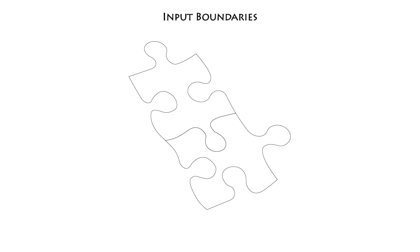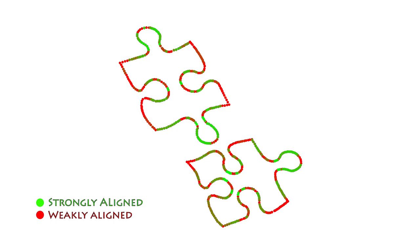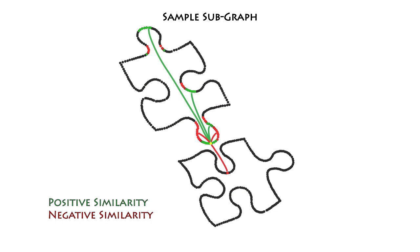Specifically, we control where the vector field is forced to align with a region boundary, and where not. The nodes in our graph are the vertices of the boundary polyline. Each vertex has an associated attraction value indicating how strongly we want the field to be aligned with its tangent. Here, green shows strongly aligned regions and red weakly aligned regions. We define alignment labels using a graph cut approach.